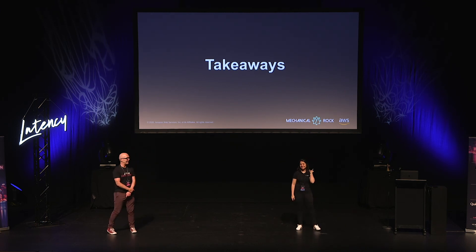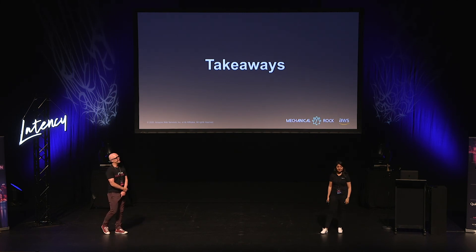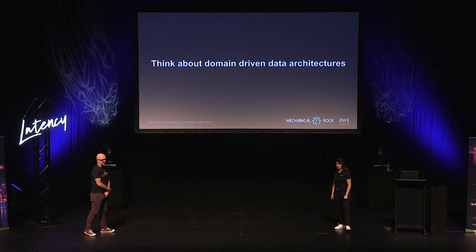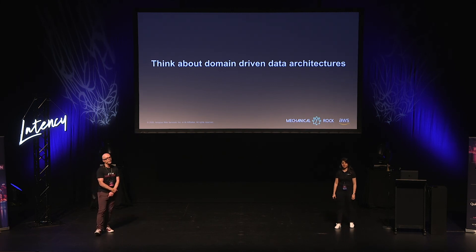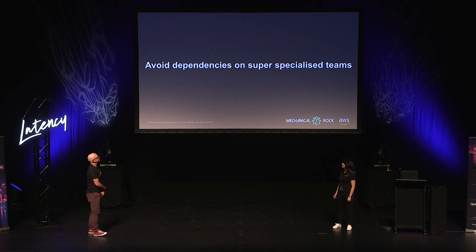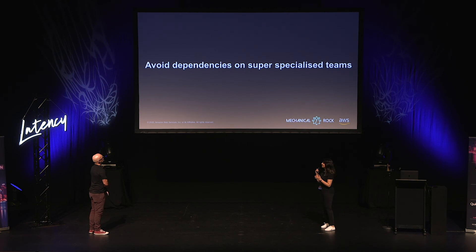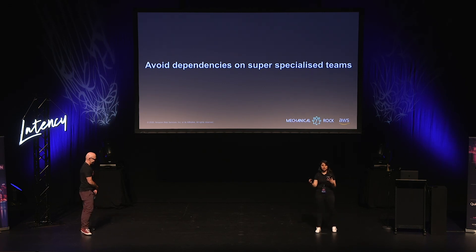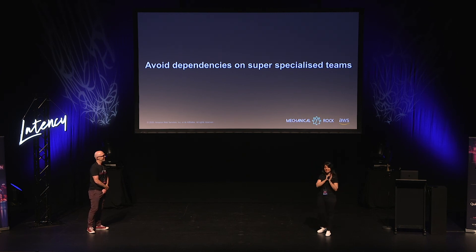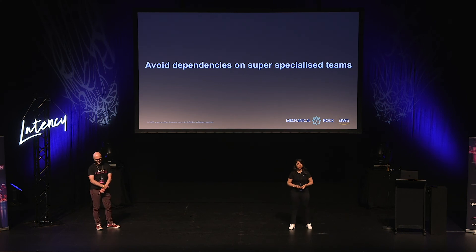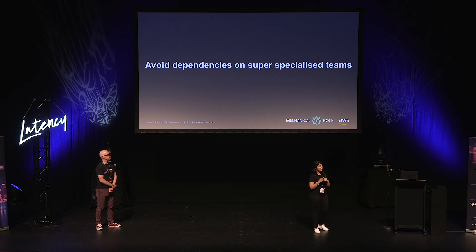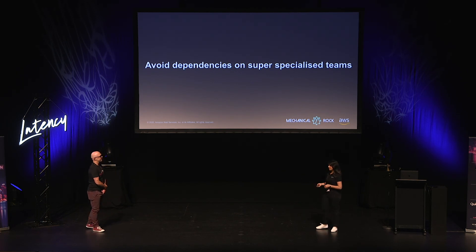Demo gods were kind — everything worked. Key takeaways: think about domain-driven architectures. Just the same way you think about domain boundaries when developing software, apply the same thought processes when thinking about data. There's absolutely no difference and it fits really well. Avoid dependencies between super-specialized teams. For example, if you've got a centralized DevOps team, you're doing something very wrong. DevOps teams shouldn't be separate — the same way your data team should not be separated. Everything should be within the app platform. They build the application, they should be able to deploy it, take care of their own data — they're the domain owner.